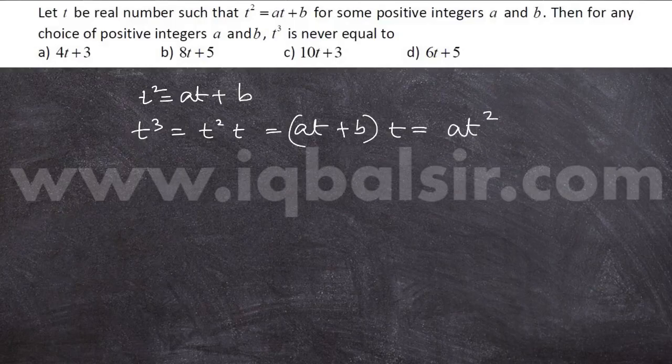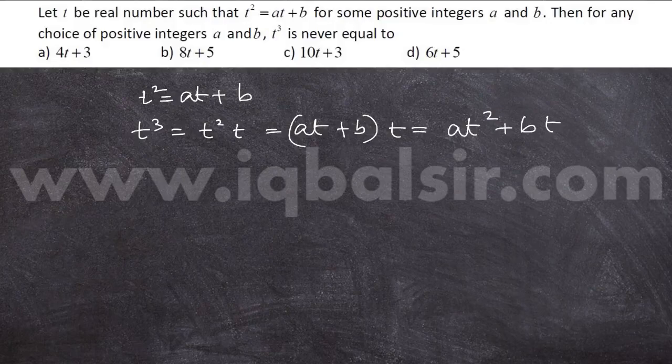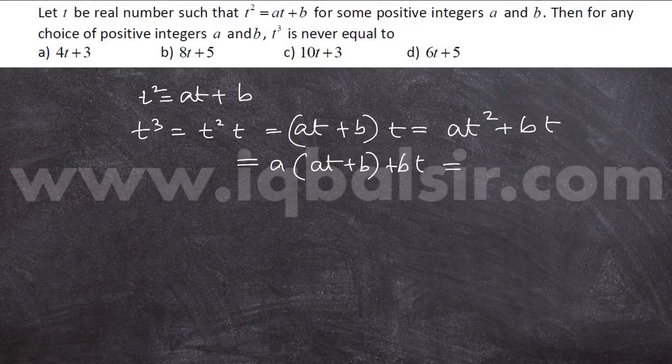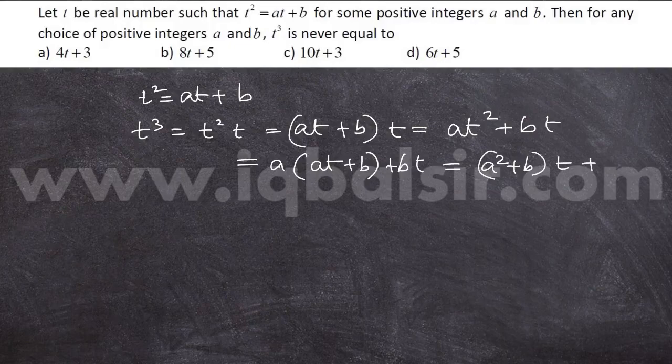This is at squared plus bt. Again, you can substitute for t squared as at plus b. So this comes out to be a squared plus b times t plus ab.